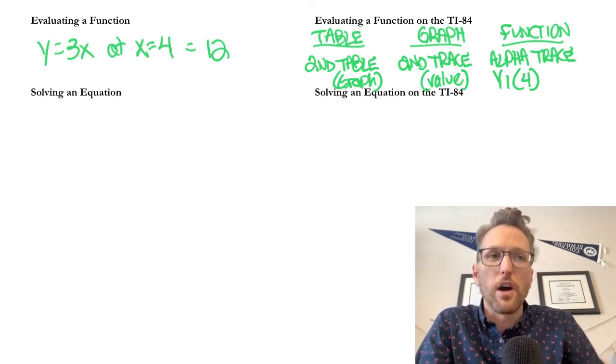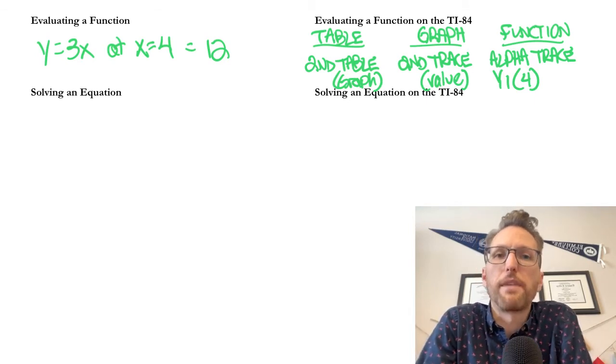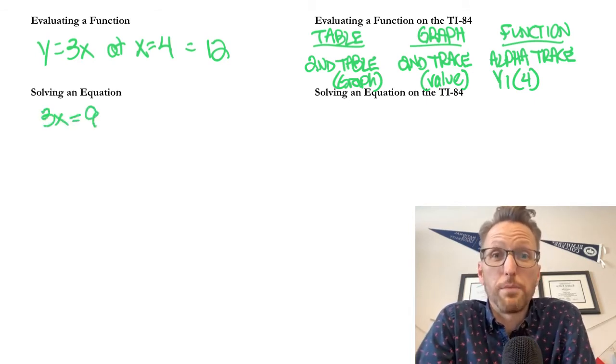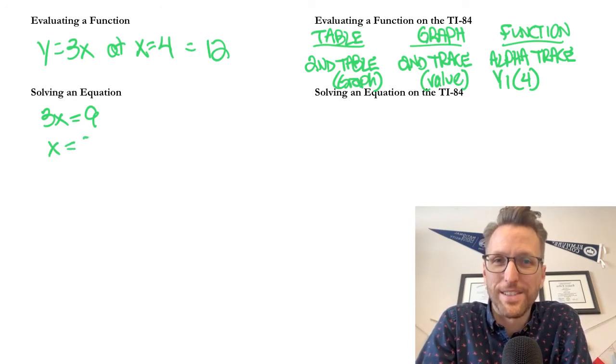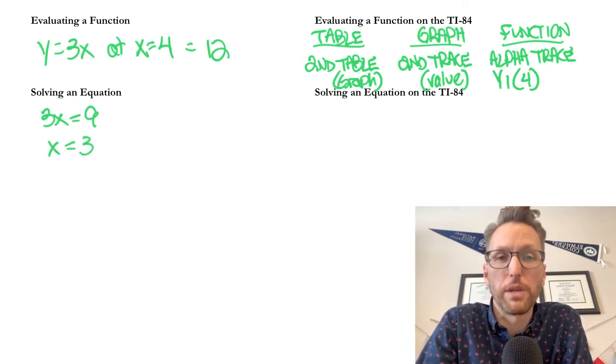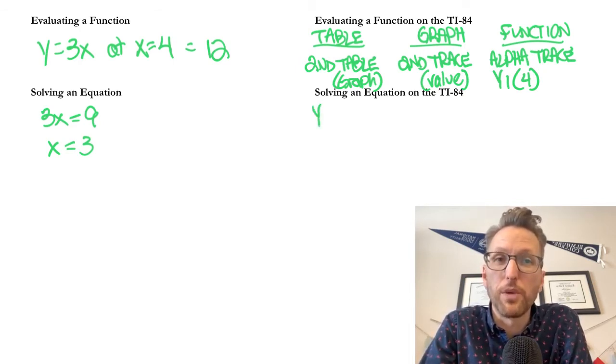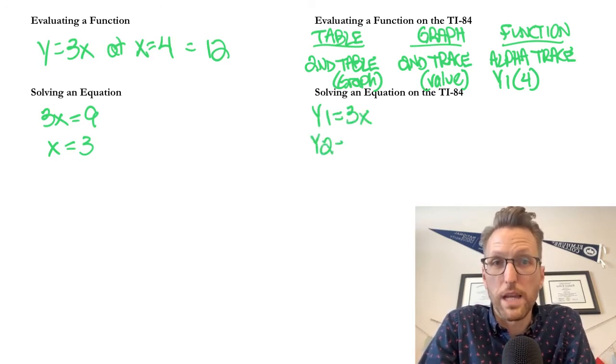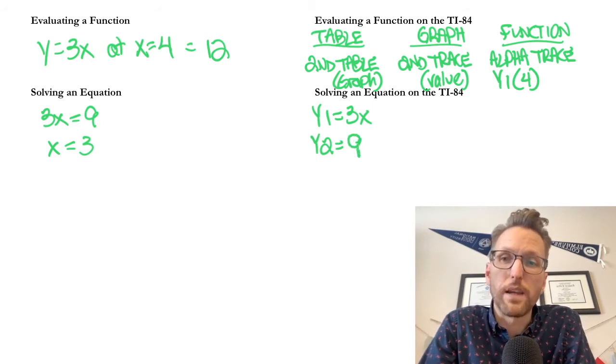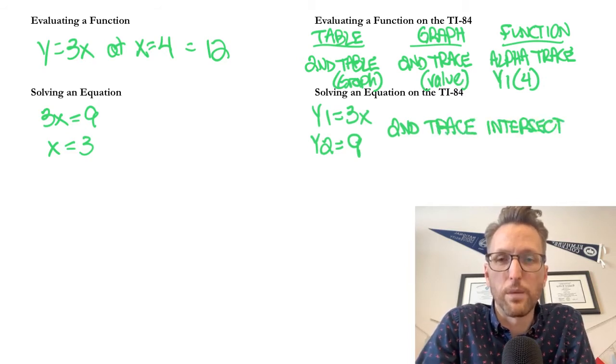But finally, solving an equation. And so let's say we have 3x equals 9. We could see pretty quickly that the answer to that is 3. We just divide by 3 and we have x equals 3. We solved it by hand. That's an algebraic step we can do. But if we have more complicated things that we want to do on the calculator, we can easily do that. So we take the left side of the equation. We enter it as y1. We take the right side of the equation and enter it as y2. And you could do this with two separate equations as well. And then you press second trace intersect.